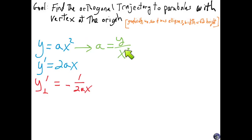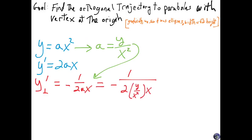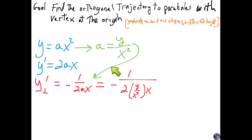For any particular blue parabola, the coefficient a equals y over x squared. This can vary parabola to parabola, but on any fixed parabola, a is y over x squared. Now that I know a in terms of y and x, I can substitute that back into the differential equation. Instead of writing a as a constant, we substitute, and after simplifying x over x squared we cancel one x to get negative x over 2y.